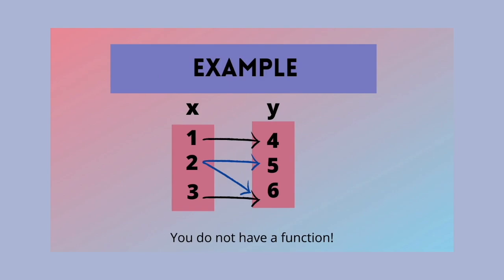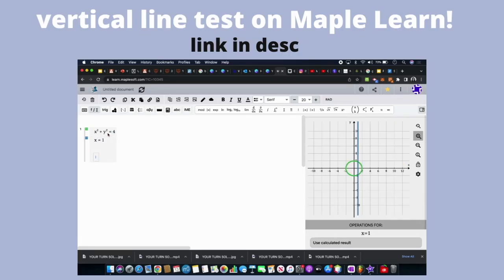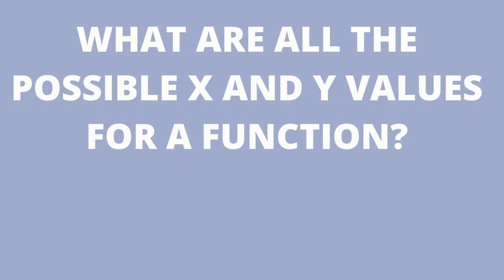There's an easy way to prove that a function is a function: the vertical line test. Graph the function and draw a vertical line. If there's any two points that intersect with that vertical line, you do not have a function. You can plug in random values of x to get their y values.